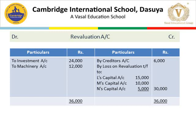So we write on the debit side: to investment — loss of Rs. 24,000. Point 4: machinery will be reduced to Rs. 58,000. In the balance sheet machinery is Rs. 70,000; reduced to Rs. 58,000 means a loss of Rs. 12,000. Decrease in asset is a loss, so we write on the debit side: to machinery Rs. 12,000. Point 5: a creditor of Rs. 6,000 was not likely to claim the amount and hence was to be written off — this is straight away a profit for the firm.